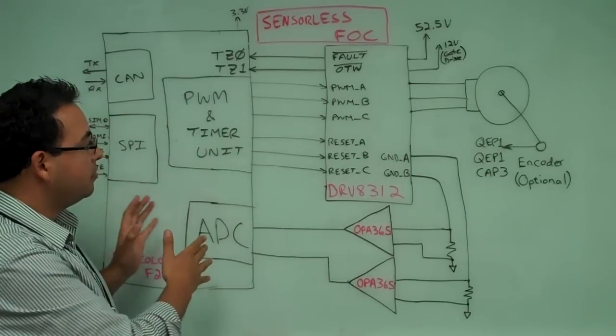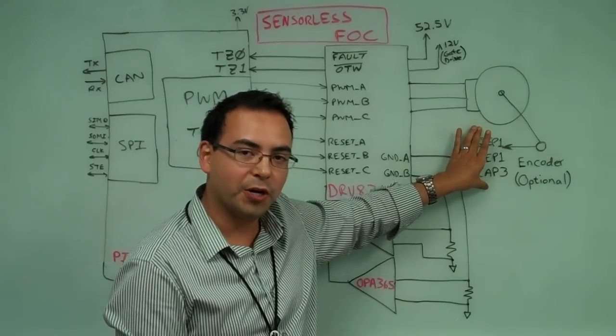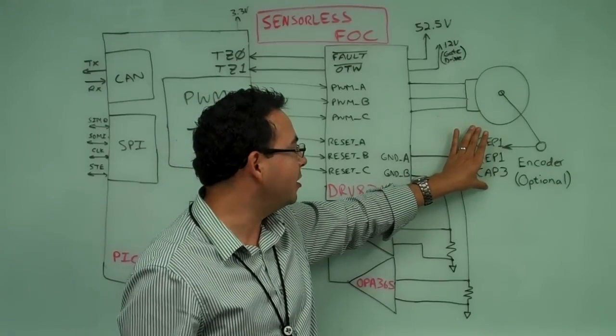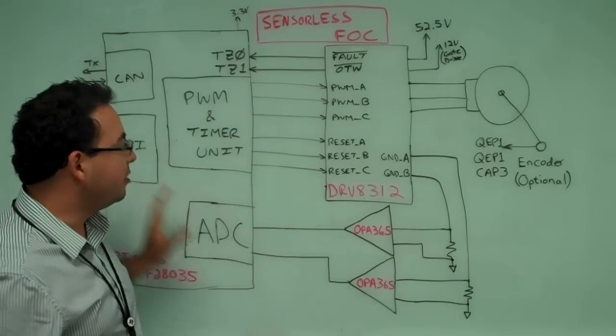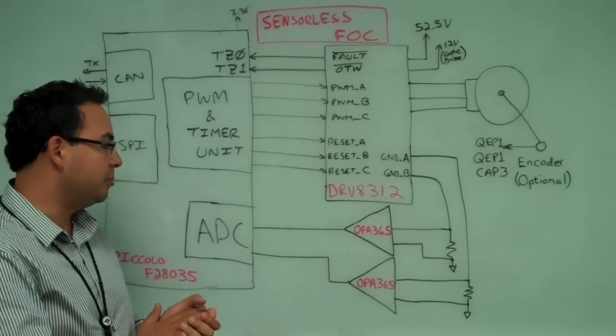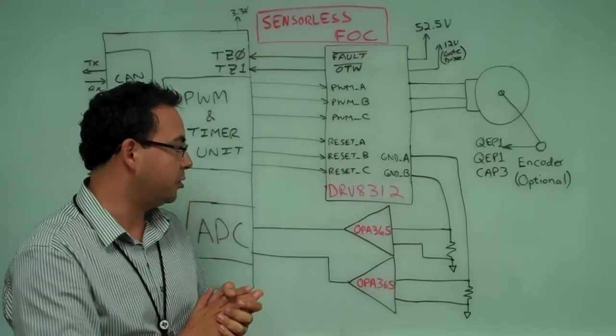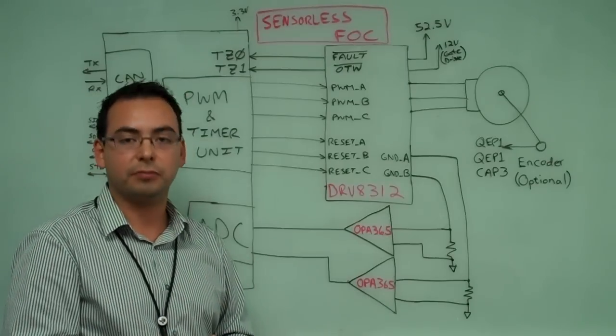So the estimator saves us a few bucks by not having an encoder, which is always a good thing. Save money there. And we have a very nice control, the brains and the power, the estimator and the control loops. It's a perfect example of a good system for control.